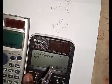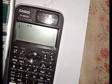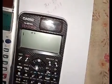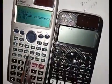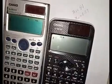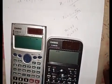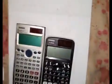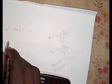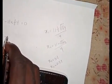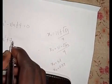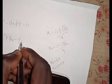To refresh your calculator, press Shift and 9, then select Initialize or reset, then press equals twice. Let me do that now. Let's see another example: 2x² plus 7x minus 4 equals zero.